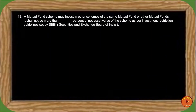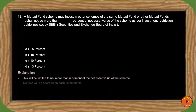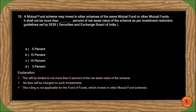Next question: A mutual fund scheme may invest in other schemes of the same mutual fund or other mutual funds — it shall not be more than 10% of net asset value as per SEBI investment restriction guidelines. As per SEBI guidelines, this investment should not exceed 5% of the scheme's net asset value. The AMC cannot charge any fees on such investments. This rule is not applicable to fund of funds, which invest in other mutual fund schemes. So the correct answer is option A, 5%.